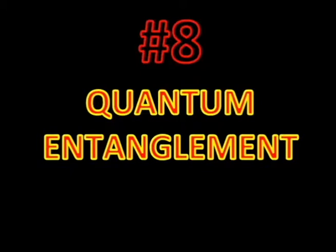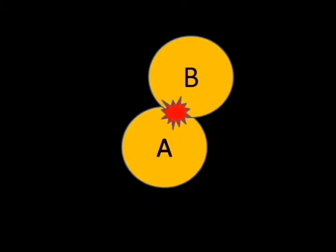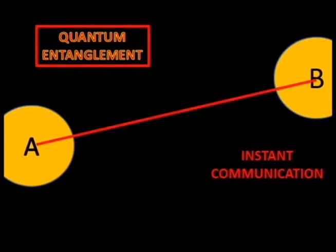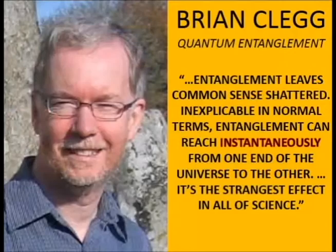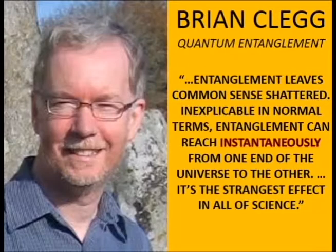Quantum entanglement. Two particles come together and they get married, so to speak, such that when they're traveling apart, if one changes its state, the other knows it immediately. This kind of disagrees with the theory of relativity, which says that the speed of light is the fastest thing there is, including signals. So how does particle A signal particle B of its change of state instantly, even when they're separated by light years of distance? Brian Clegg, who wrote a book on quantum entanglement, said: entanglement leaves common sense shattered. Inexplicable in normal terms, entanglement can reach instantaneously from one end of the universe to the other. It's the strangest effect in all of science.